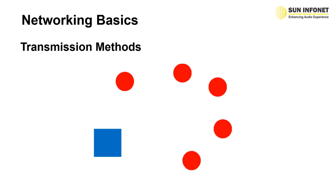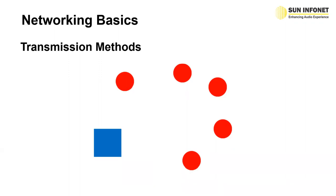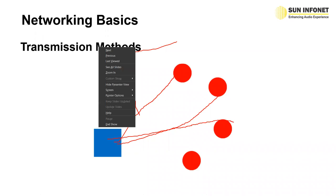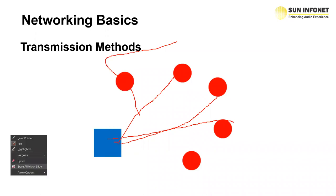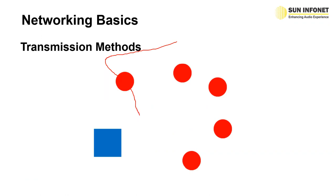The first thing we need to know is what transmission modes are available. The first is unicast — one to one. We have multicast, which is one to many. If three devices want the same information, you can send it to only those three devices. And broadcast is, of course, sending it to all devices. Understanding unicast and multicast is very important for Dante specifically.